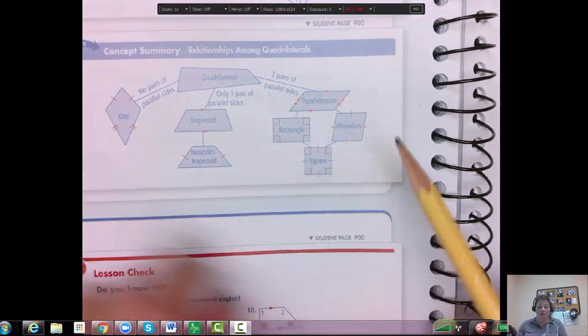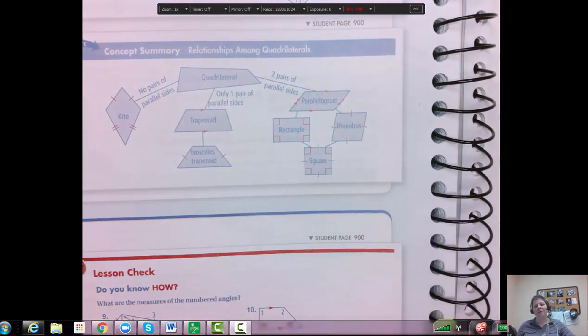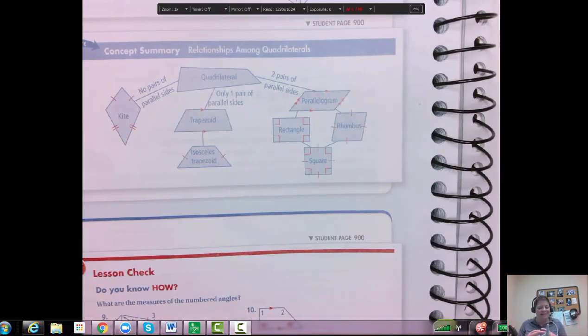Rhombus is also a parallelogram, it's also a quadrilateral. So these kind of diagrams you might want to write in your notes just to help you remember. The overall idea of this entire chapter is summed up right there with that picture.